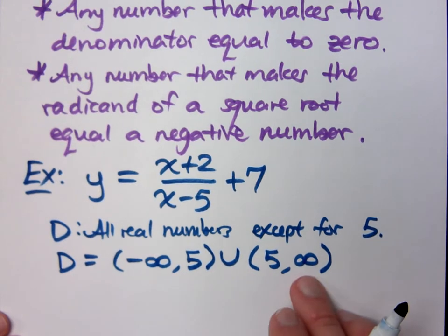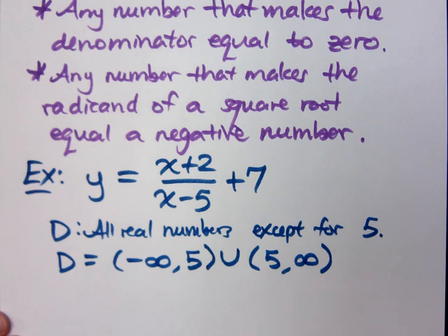This is how you express everything except for five. It says you can get as close to five as you want to from the left, you can get as close to five as you want to from the right, as long as you don't include the five.